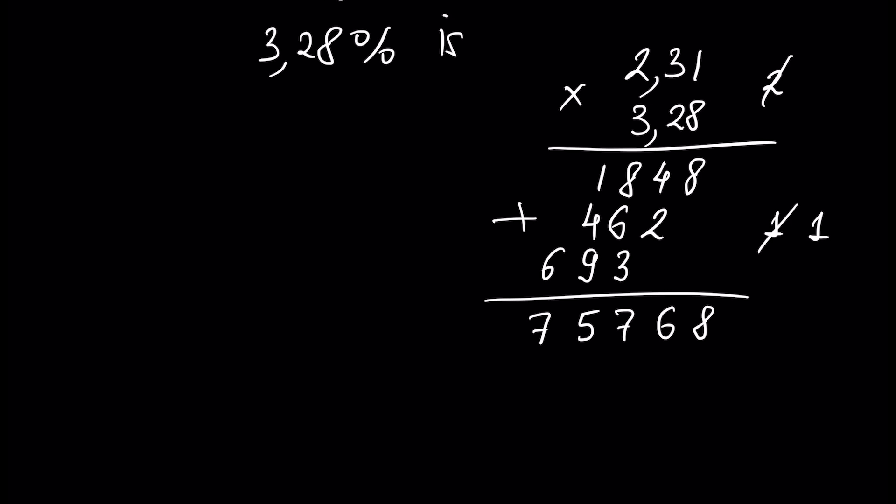And we count off the numbers here: 1 and 2, and also 3 and 4. The number of digits after our floating point in our factors is 4, and that's why we count off here 1, 2, 3, and 4.